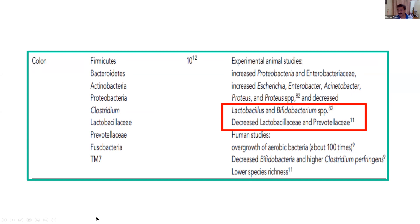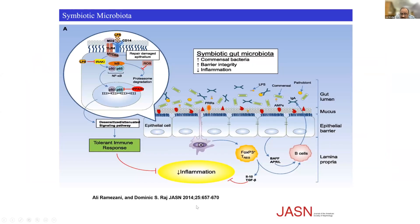You can just imagine how it differs from the normal human gut in CKD and end-stage renal disease patients. Between the gut lumen there is a barrier of epithelial cells and a mucosal layer over the epithelial cells, and then there is the lamina propria. There are very tight junctions between the inter-epithelial cells, and in a normal symbiotic gut microbiota you can see only a few pathobionts. Commensal bacteria are more, lipopolysaccharides are few, and the mucosal layer is also very thick.